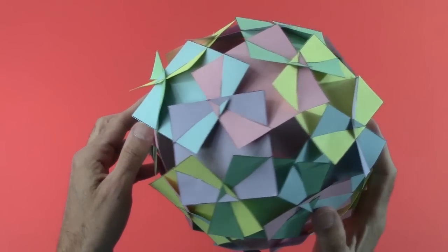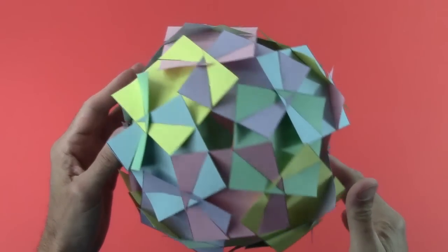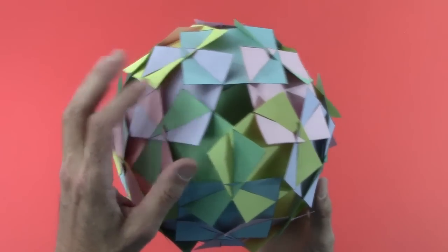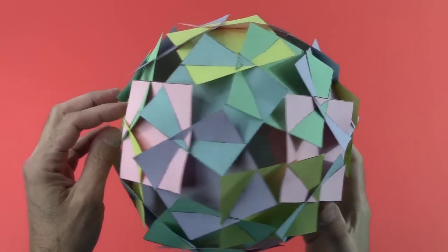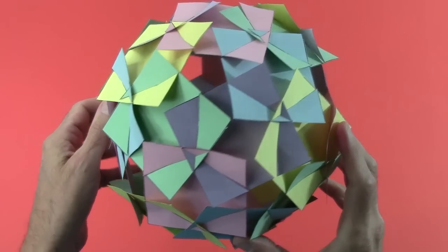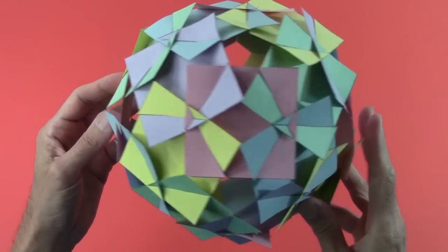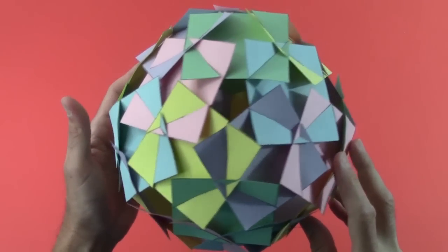This next one is made of thirty squares. There are five colors, arranged so all five appear around each star. Again, there are small triangles where the parts overlap each other at the three-way intersections. It's very important to assemble those little triangles correctly, as they keep everything from falling apart.